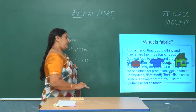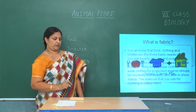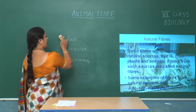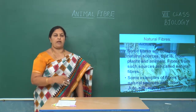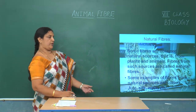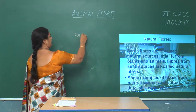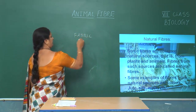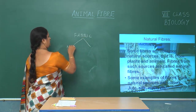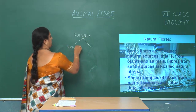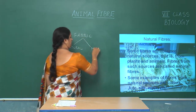The material that we use for clothing is called fabric. Let us study how this fabric is produced and from what fibers the fabric is produced. The fabric is produced from two types of fibers: one is natural fiber and the other one is manmade fiber.